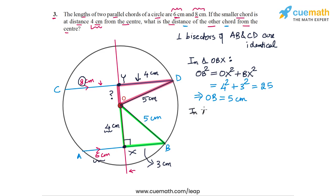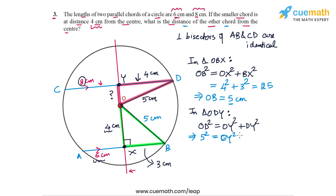In triangle ODY, we have OD² = OY² + DY². OD is the same as OB, which is 5. So 5² = OY² + 4², giving us OY² = 25 − 16 = 9. Therefore OY = 3 cm.